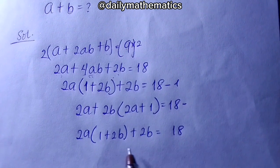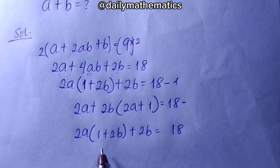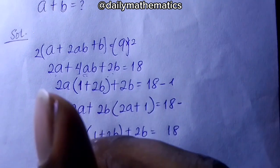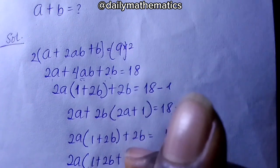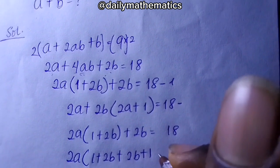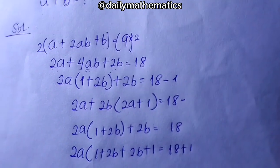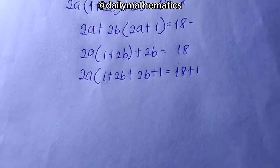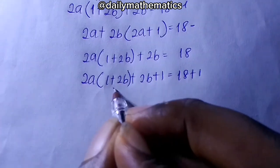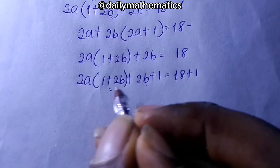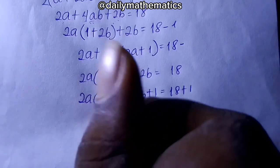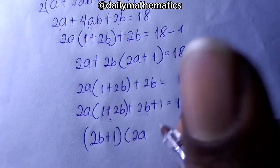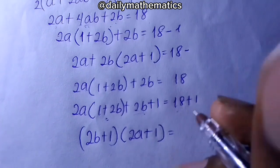Looking at this, (1 plus 2b) would be common if there were a plus 1 in the remaining term. So I'm going to add plus 1 here: 2a bracket (1 plus 2b) plus (2b plus 1). When we add plus 1 here, we also add 1 to the other side of the equation. Now (1 plus 2b) and (2b plus 1) are the same thing — they're common. Bringing it out: (2b plus 1)(2a plus 1) equals 18 plus 1, which gives us 19.